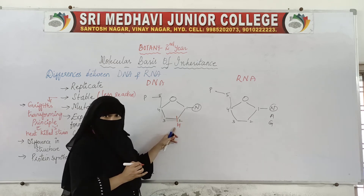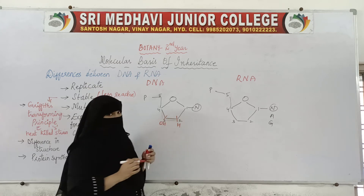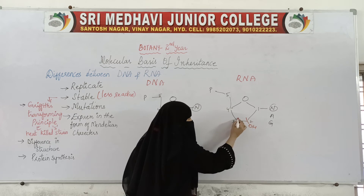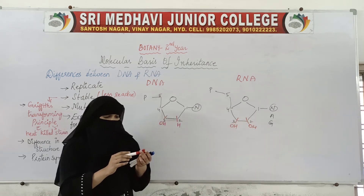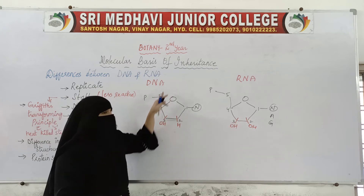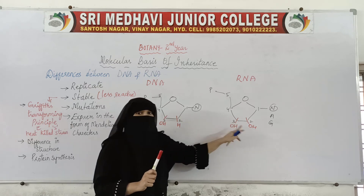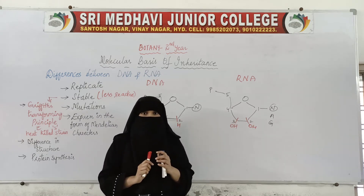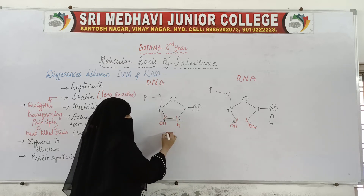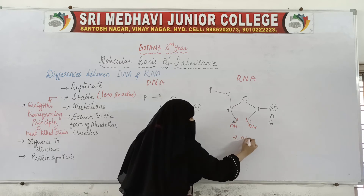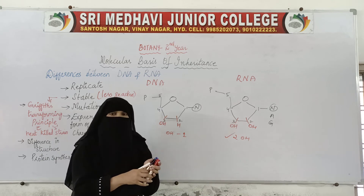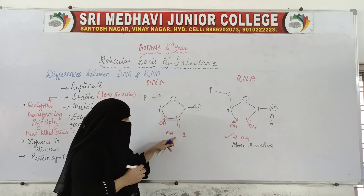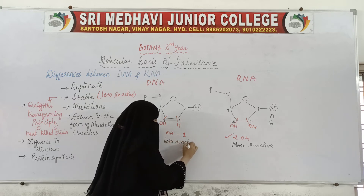In DNA, at the second carbon we have an H group, whereas at the third carbon we have an OH group — there is only one OH functional group in DNA. Whereas in RNA, on the second carbon we also have an OH group, and on the third carbon we also have an OH group. So in DNA we have only one OH group, whereas in RNA we have two OH groups.